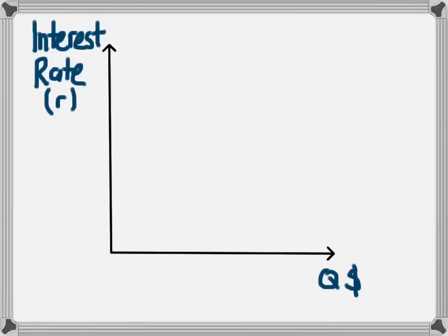The first diagram we're going to look at is the supply and demand of money in an economy. The price and quantity are shown on the supply and demand diagram just like any other, but the price of money is the interest rate. So the price of getting money today is the interest rate that you'll have to pay on that money.